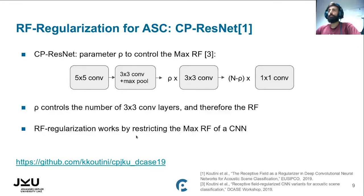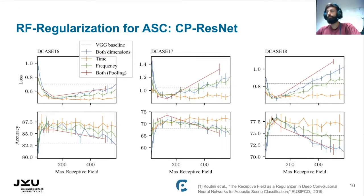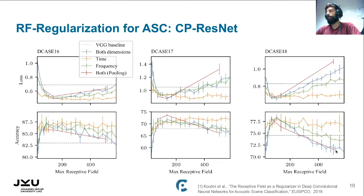RF regularization works by restricting the maximum Receptive Field of a CNN as it goes deeper — we don't let the Receptive Field grow unboundedly. These plots from previous work on CP-ResNet show results on three acoustic scene classification datasets: DCASE 2016, 2017, and 2018, with accuracy on the bottom and loss on top, and the x-axis representing maximum Receptive Field. We can see that increasing the Receptive Field over time has minimal effect, while increasing it over frequency or both dimensions increases loss and decreases accuracy. Importantly, if we increase the Receptive Field by adding pooling layers without changing the number of parameters, the same degradation pattern holds.